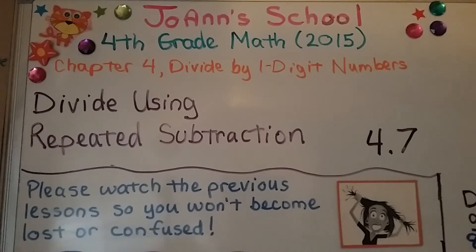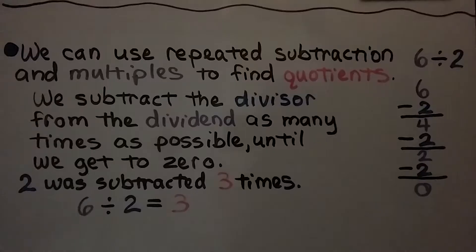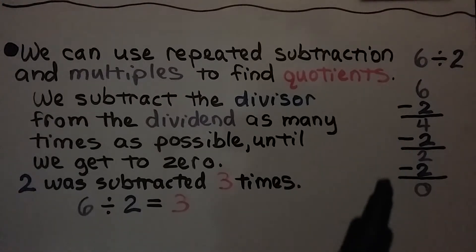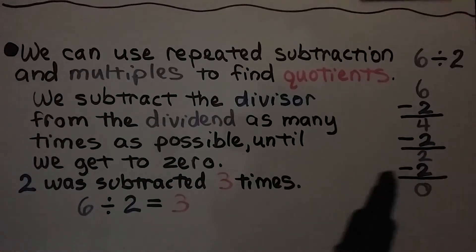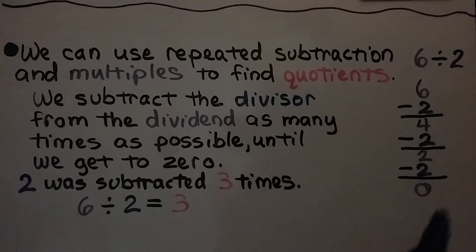Lesson 4.7: Divide using repeated subtraction. We can use repeated subtraction and multiples to find quotients. We subtract the divisor, so remember this is the dividend, that's the divisor, that's the quotient. We subtract the divisor from the dividend as many times as possible until we get to 0. The 2 was subtracted 3 times, so 6 divided by 2 is equal to 3.